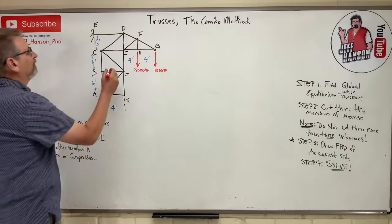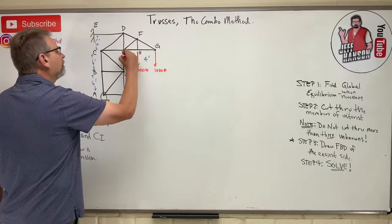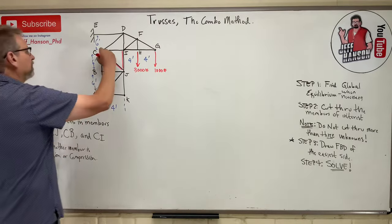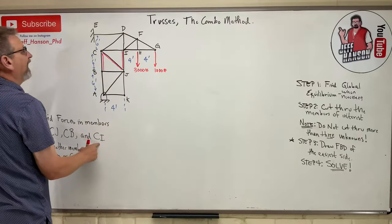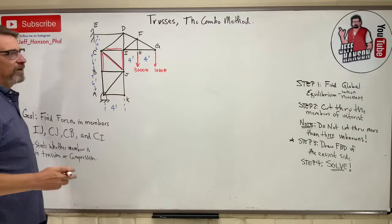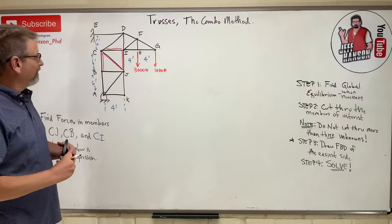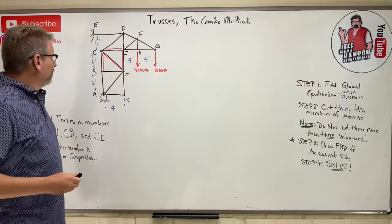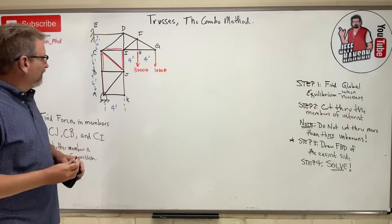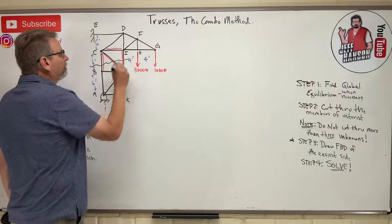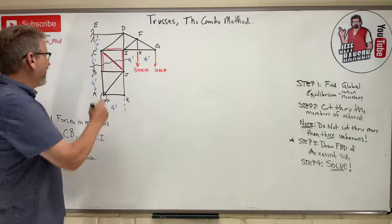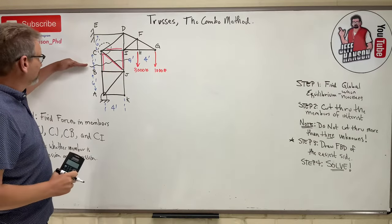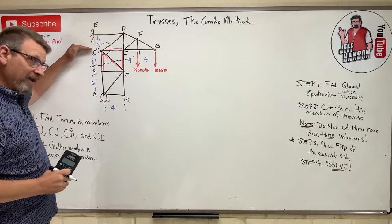This says find the four sin members: IJ, CJ - where is that? Here's IJ right there, and CJ right there, and who else? CB, and CI. Oh yucky, that one up there. If you remember from the method of sections, I can't cut that truss in half and cut through all four of those members of interest. Can't do it.